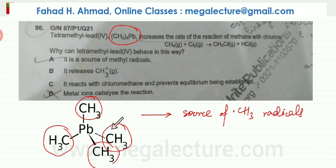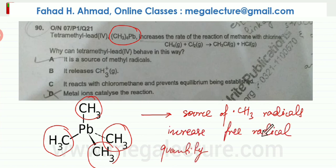—that it is a very good source of methyl radicals. So as soon as you add tetramethyl lead, a lot of these methyl radicals are going to break off. And when they break off, the radical concentration would increase. There would be more radicals in the reaction, so there's more free radicals.